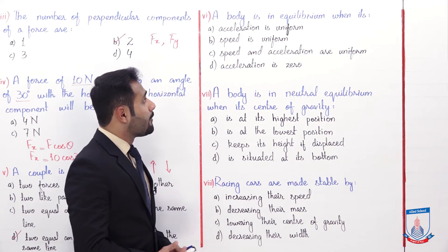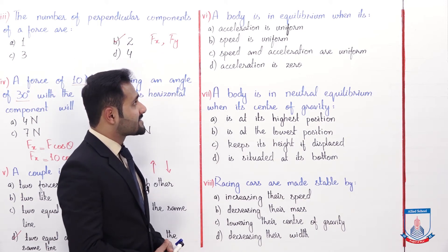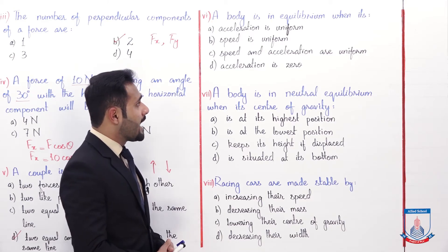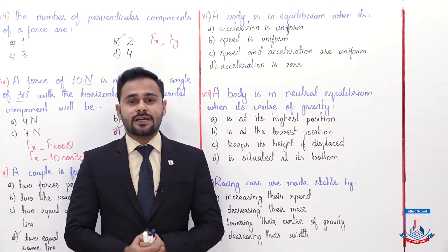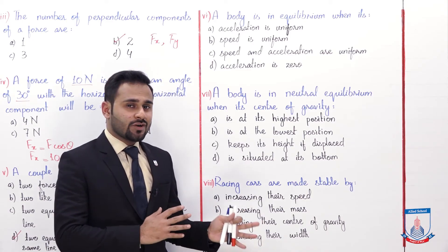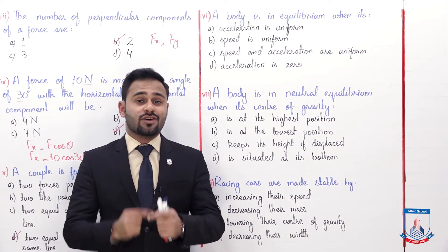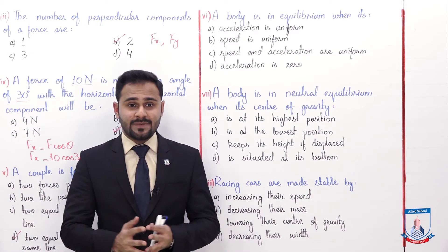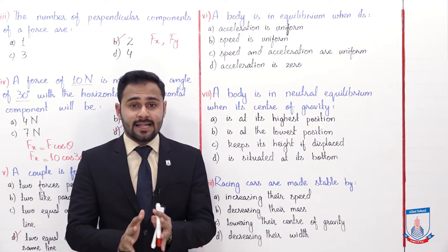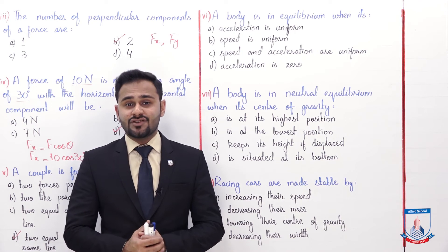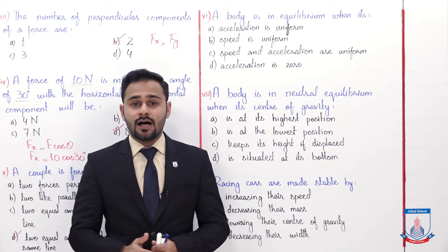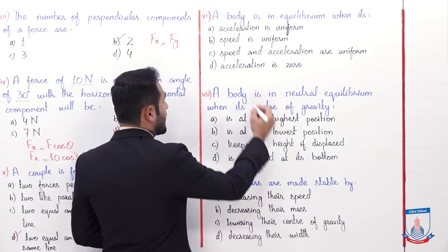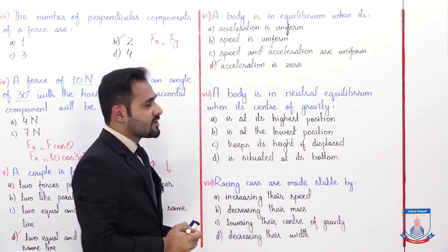MCQ number six: A body is in equilibrium when its — A: acceleration is uniform, B: speed is uniform, C: speed and acceleration are uniform, D: acceleration is zero. Acceleration is only produced when velocity is changing. So the correct option is D, which is acceleration is zero.